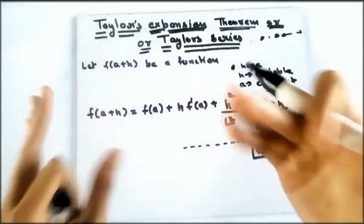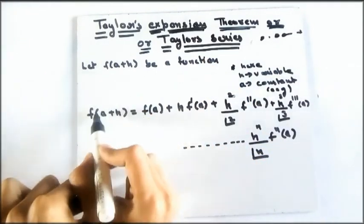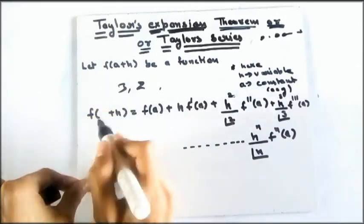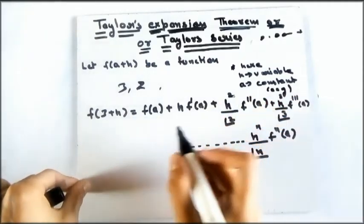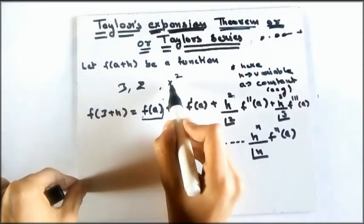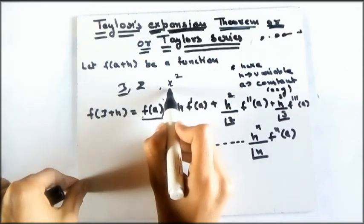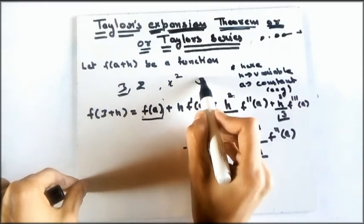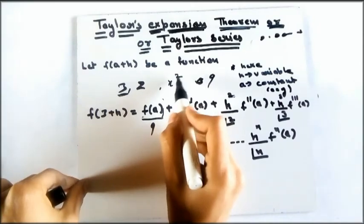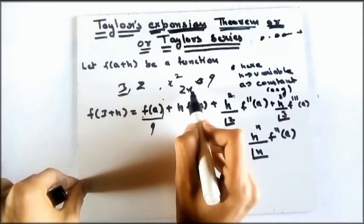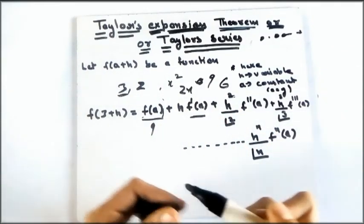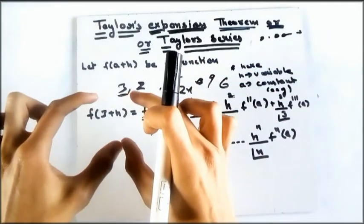This form is known as the expansion around the point a. This type of question comes in a lot of examinations — they tell you to find the expansion around the point 3 or around the point 2. For example, if the function is x² and a = 3, then f(a) = 9, and f'(a) = 2x evaluated at 3, which is 6. You substitute similarly for all terms.